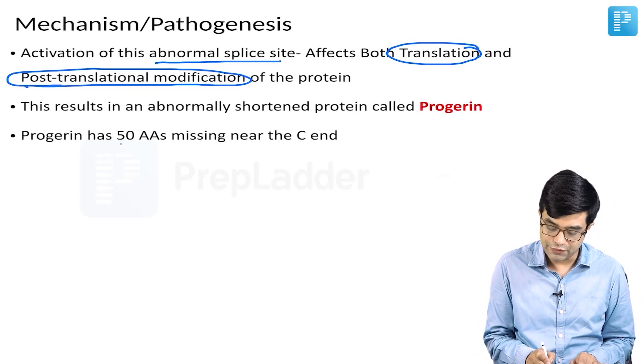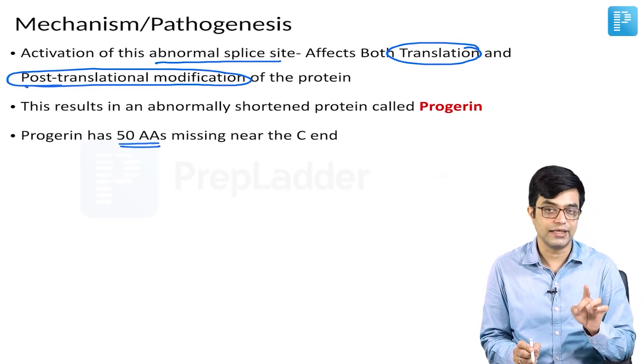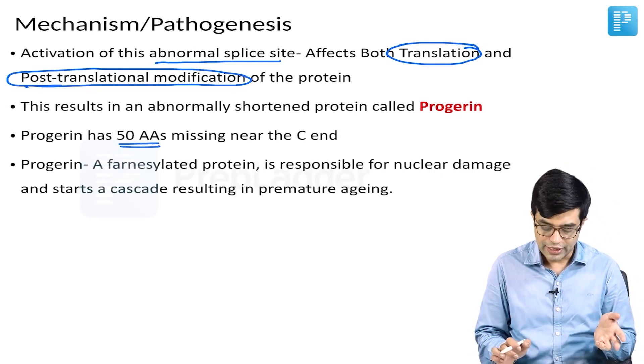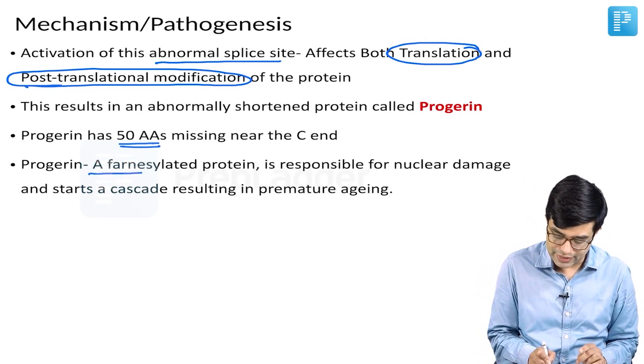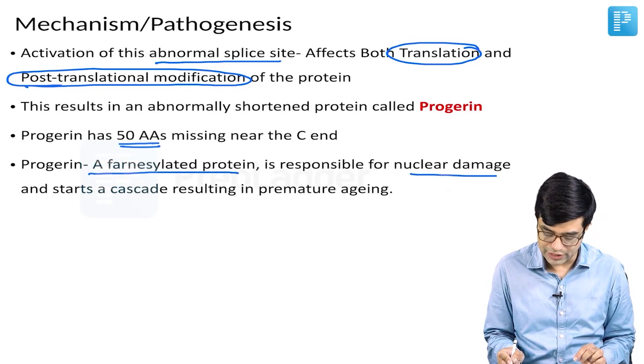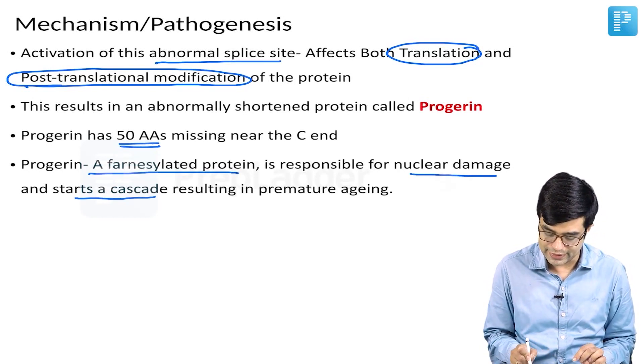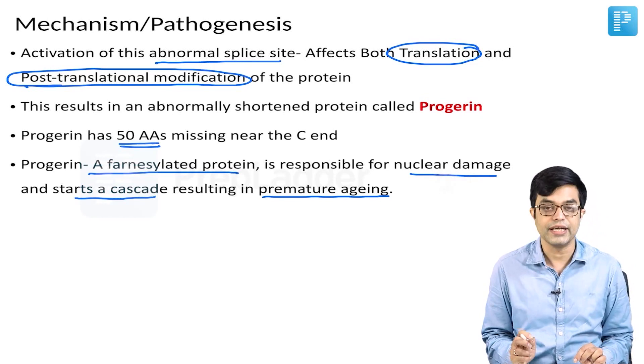This progerin has 50 amino acids missing near the C-end. Progerin is a farnesylated protein which is responsible for nuclear damage and starts a cascade resulting in premature aging.